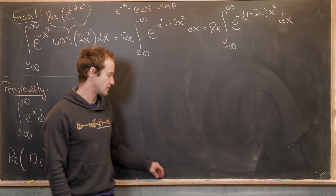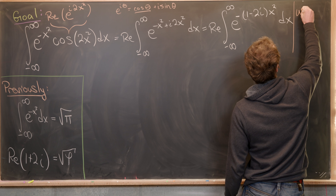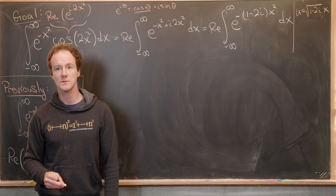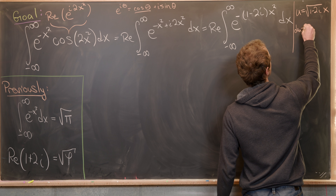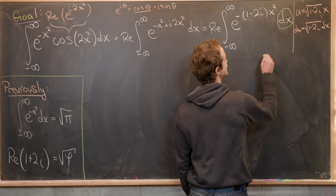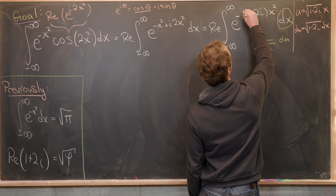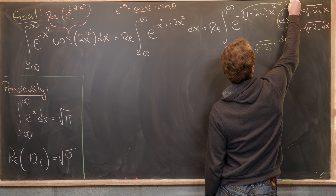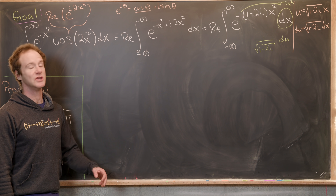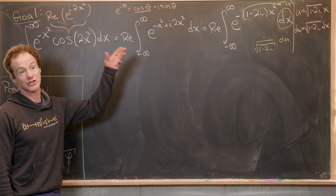Now I want to simplify this integral using a u-substitution. I'll use u equals the square root of 1 minus 2i times x, which means du equals the square root of 1 minus 2i dx. So dx equals 1 over the square root of 1 minus 2i times du, and the exponent becomes just u squared. The bounds of integration don't change because as x approaches infinity u does as well, and as x approaches negative infinity so does u — especially after taking the real part.